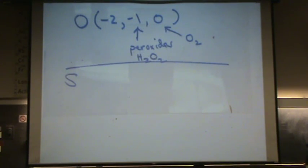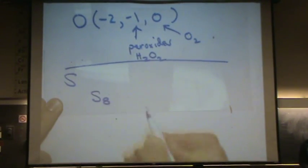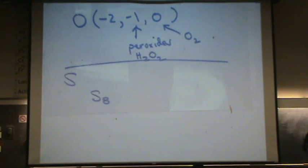The elemental form of sulfur is S8. So S8 elemental is its form. Sulfur is another common use that you've known already, sulfuric acid.